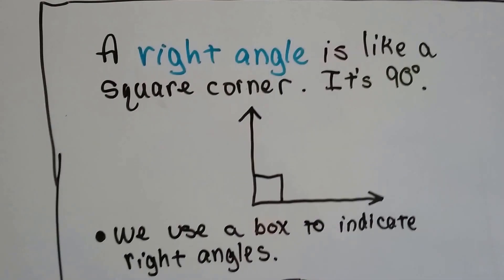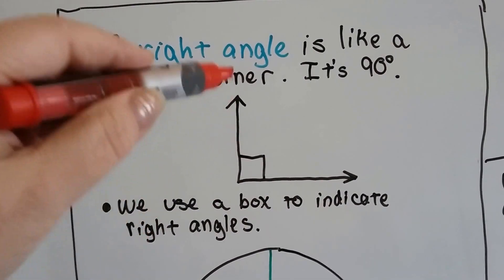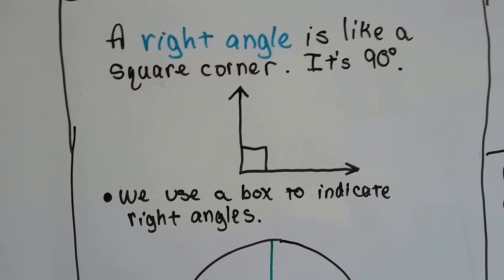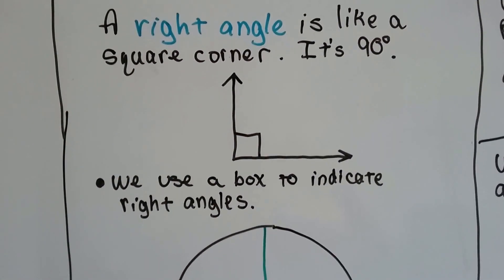A right angle is like a square corner. It's 90 degrees. See? It's like the corner of a box. So we use a little box to indicate right angles. They draw a little box inside the corner there.